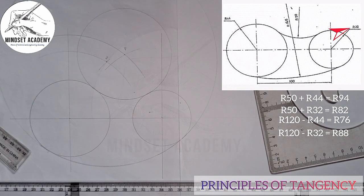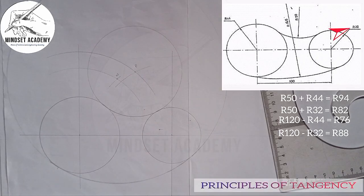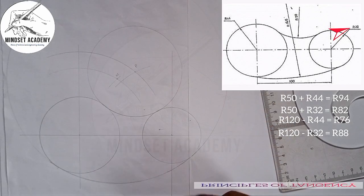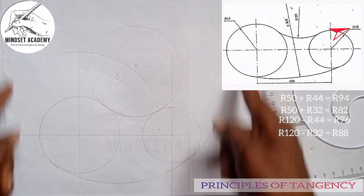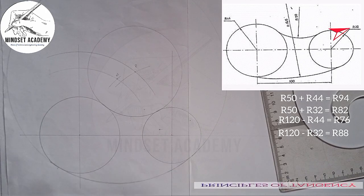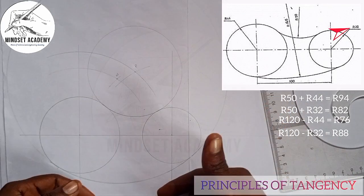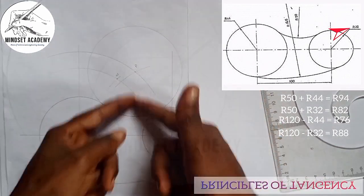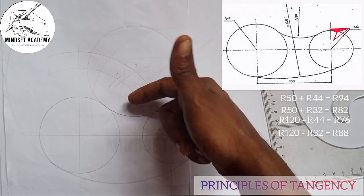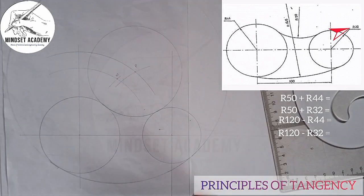Look at what is happening now — it is getting bigger. It means this is the bigger circle and these two circles are inside the bigger circle, that's why it is internal — it is inside a bigger circle. External means it is outside the bigger circle. So the key difference: whenever the circles are inside a bigger circle you subtract the radii; whenever the circles are external to the bigger circle you add the radii. When the circle is coming out you subtract; when it is coming in you add.